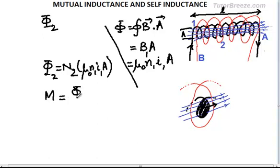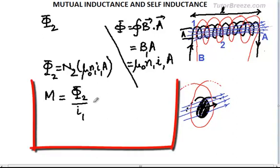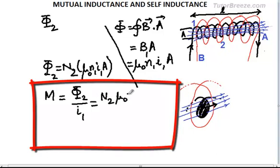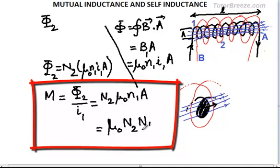So we have φ₂, the flux through the outer coil. We can find the mutual inductance as the ratio of the flux through coil 2 to the current through coil 1. This works out to be N2 × μ₀ × N1 × A. Rearranging, we write this as μ₀ × (N1/L) × N2 × A. This is the value of the mutual inductance M₂₁.